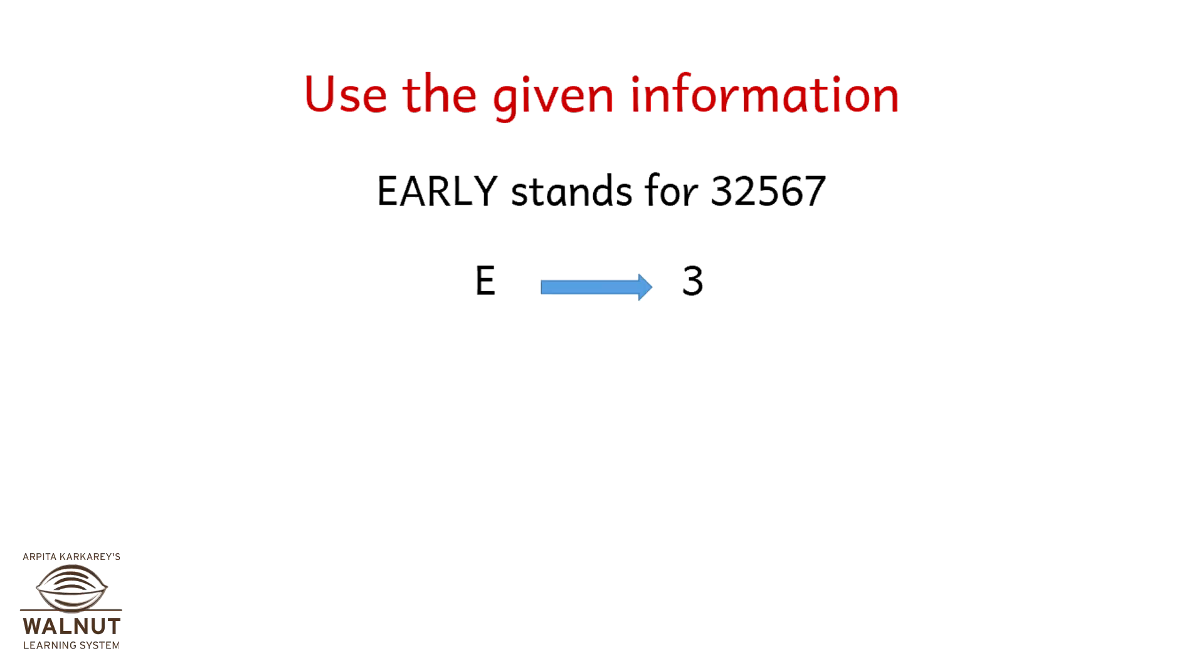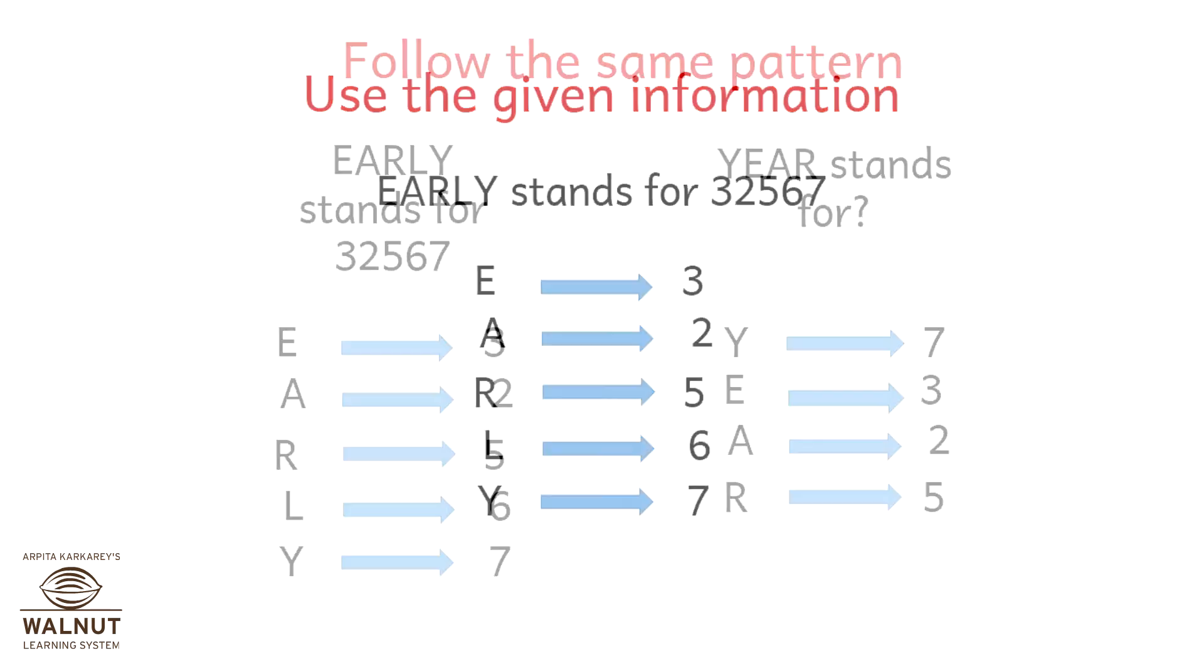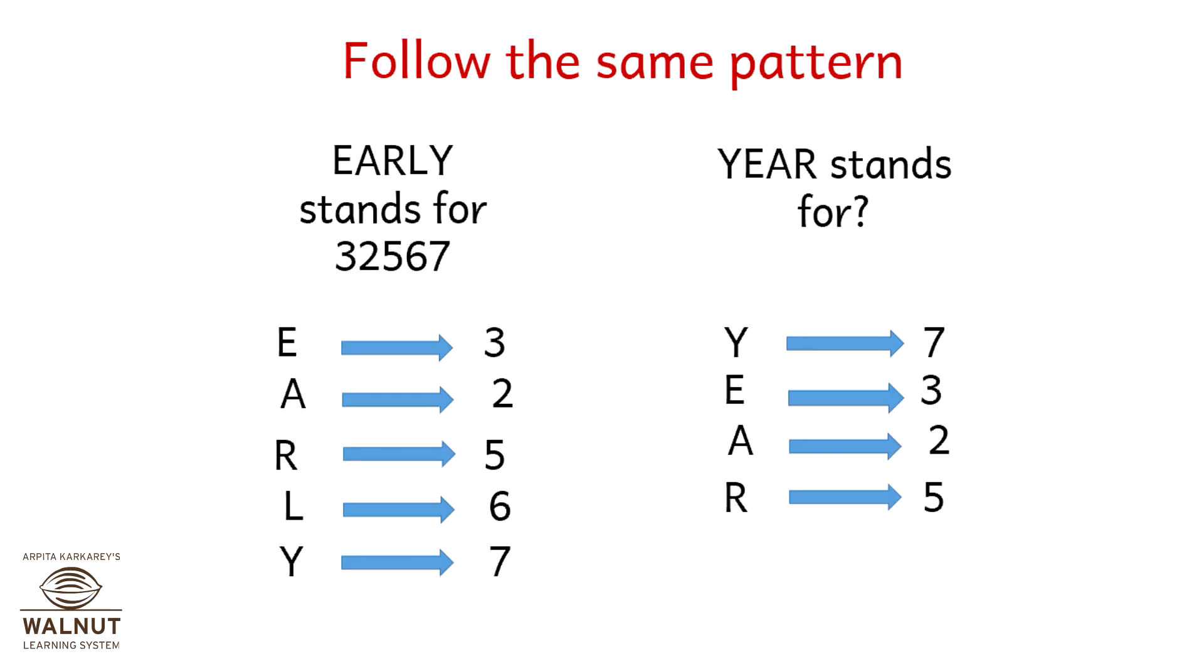Let's see what we have. We know that E is 3, A is 2, R is 5, L is 6, and Y is 7. Now let's follow the same pattern. So YEAR stands for: Y stands for 7, we already know that, E stands for 3.